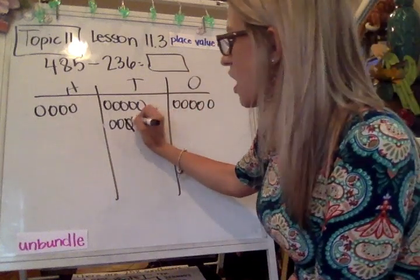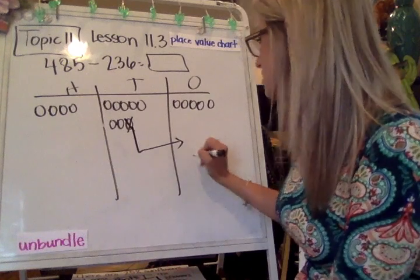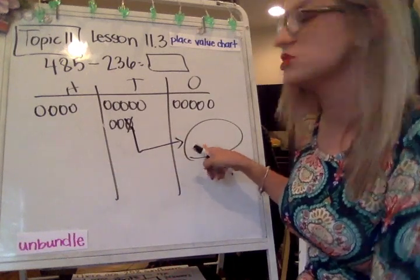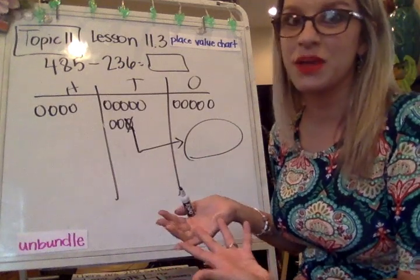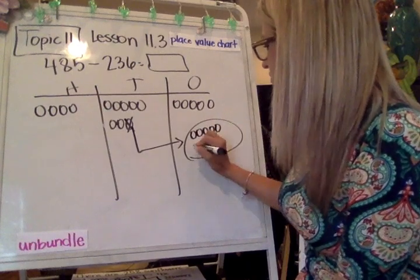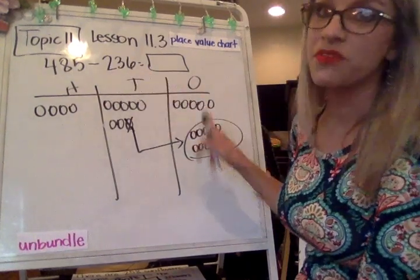So what we're going to be doing is we're going to unbundle. So this is a 10. The 10 is worth 10 ones, and when I'm making my 10 ones that I'm unbundling, I like to put it in a circle. It's just so when I'm rechecking my work, I can make sure that I put 10 inside of that circle. So 1, 2, 3, 4, 5, 6, 7, 8, 9, and 10.